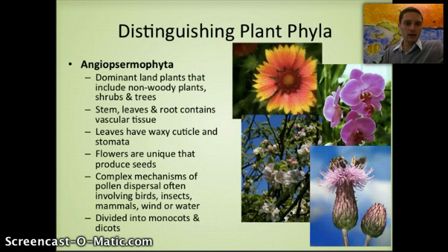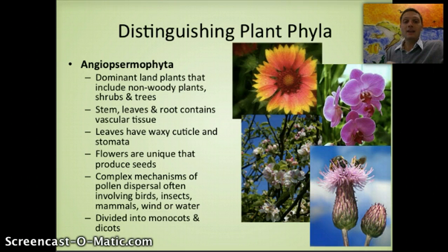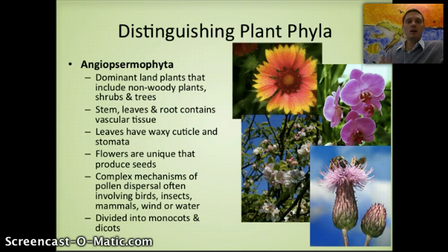The last plant group is the angiosperms — the dominant land plants including non-woody plants, shrubs, and trees. They have stems, leaves, and a root-containing vascular system, waxy cuticles, and stomata. They have flowers that produce seeds and complex mechanisms of pollen dispersal involving birds, insects, mammals, wind, or water, as discussed previously. They can be divided into monocots or dicots.